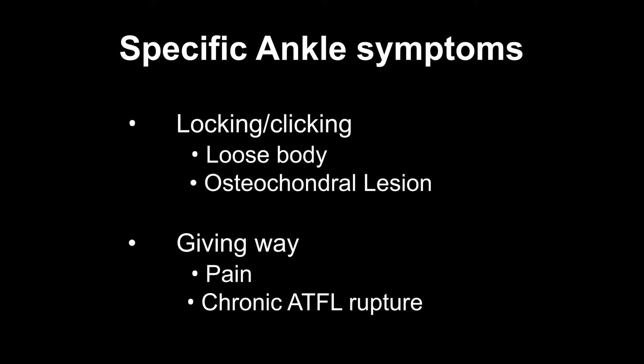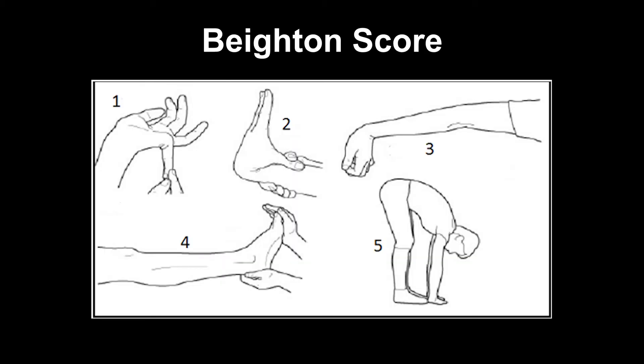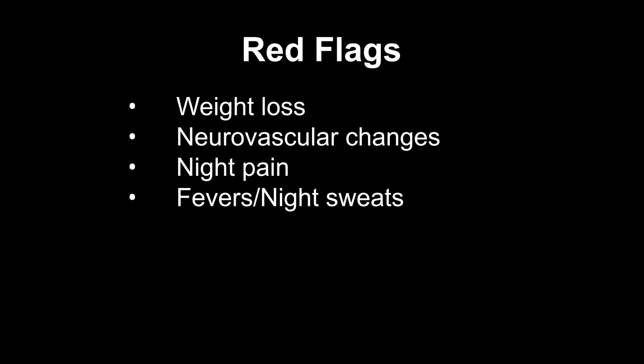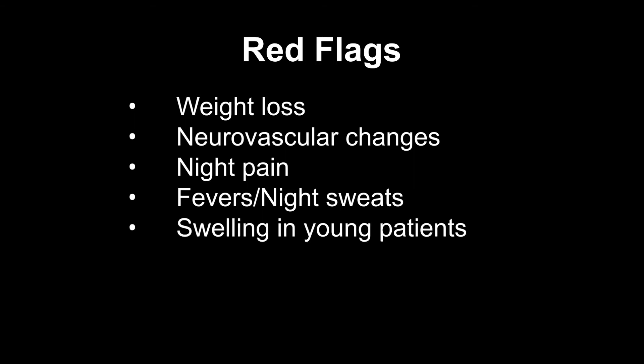The sensation of locking may suggest a loose body or an osteochondral defect. Giving way may also be a symptom and may be secondary to pain or chronic anterior talofibular ligament rupture. If there is any history of instability in the affected ankle, you may assess for signs of hypermobility using the Beighton score. Furthermore, screen for any red flags including weight loss, neurovascular changes, night pain, fevers or night sweats, swelling in young patients, or erythema.